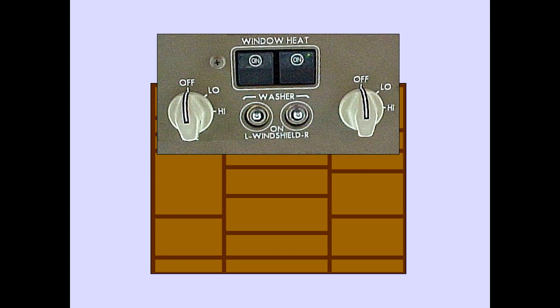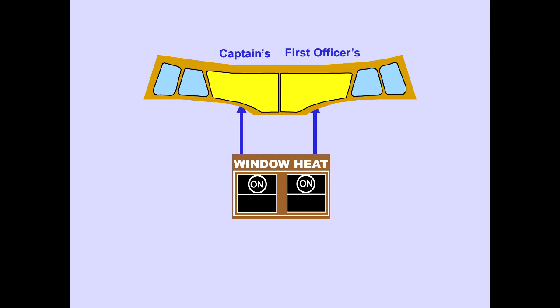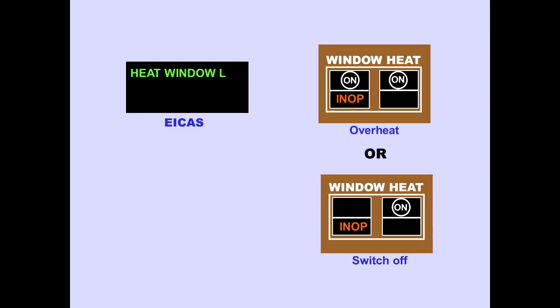Window ice and rain protection controls are located on the overhead panel. The window heat on position provides automatically controlled electrical power for windshield heat. The ICAS advisory message 'heat window' is displayed if an overheat occurs or the respective window heat switch is off.